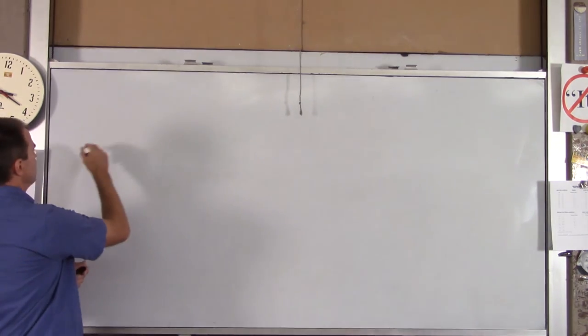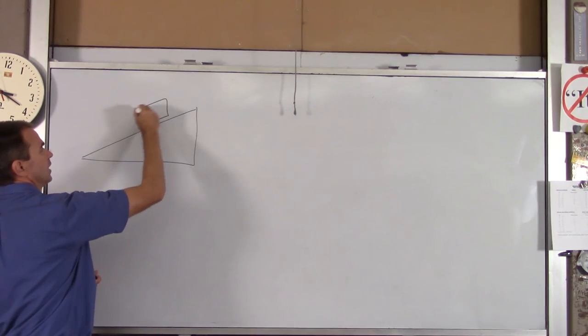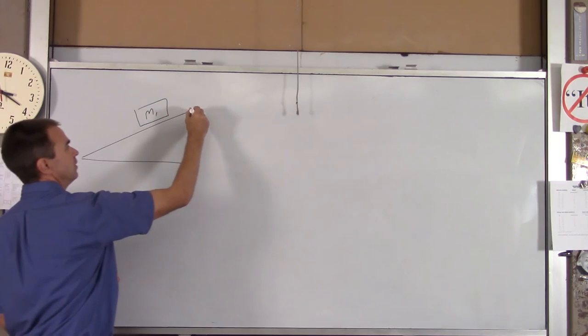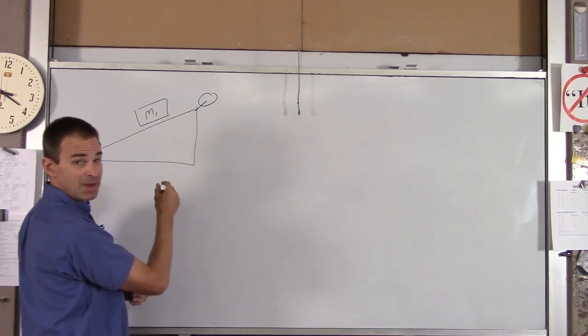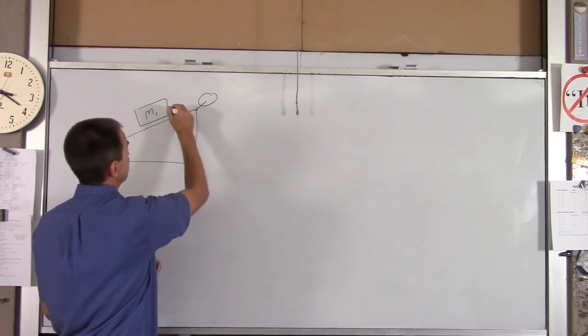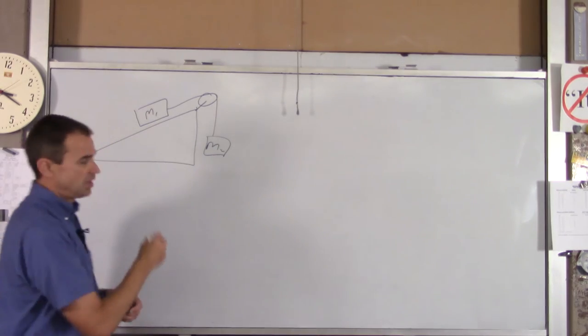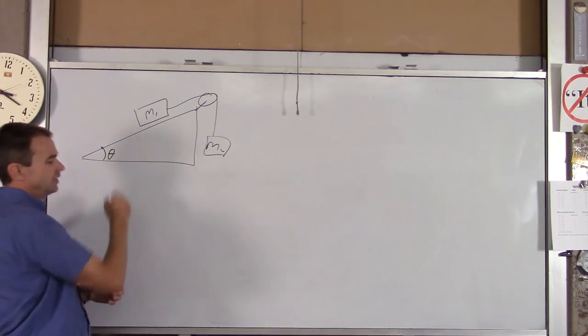So we have an incline plane, and we're going to put two blocks on it. We'll call this one M1. There's a frictionless, massless pulley, which we'll change in a little bit. But for now, we'll make it frictionless and massless. And then we have a hanging block M2. The angle of the incline is theta.